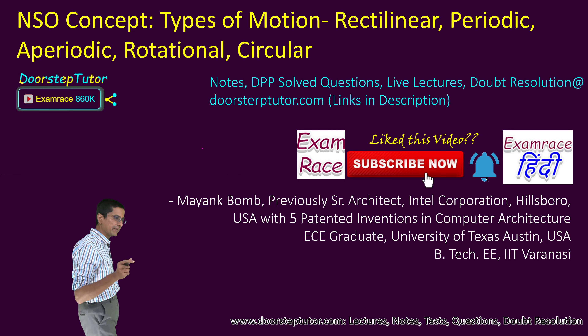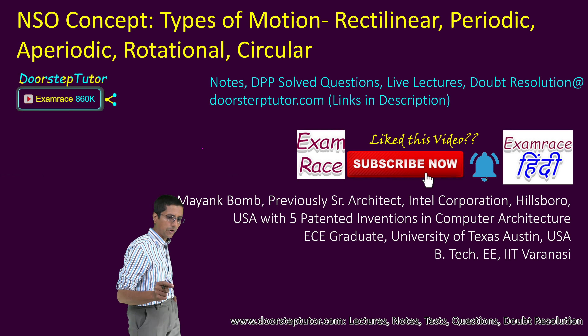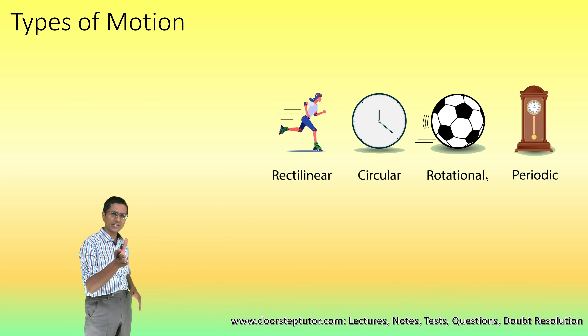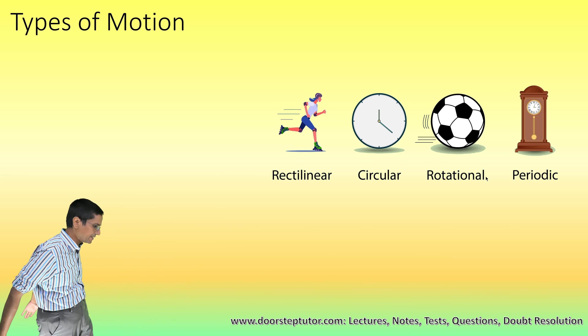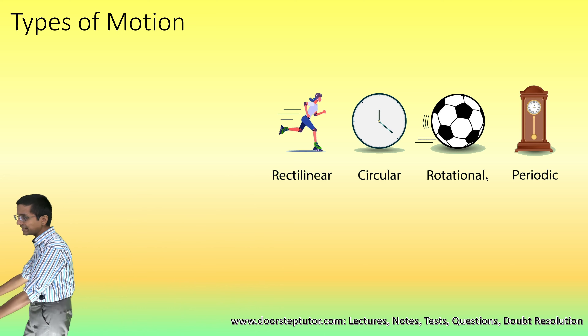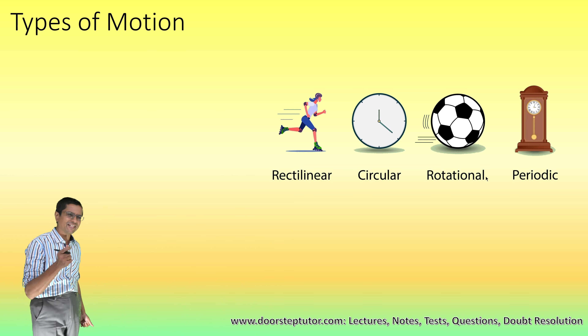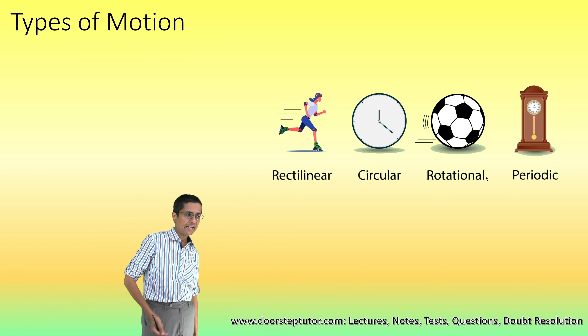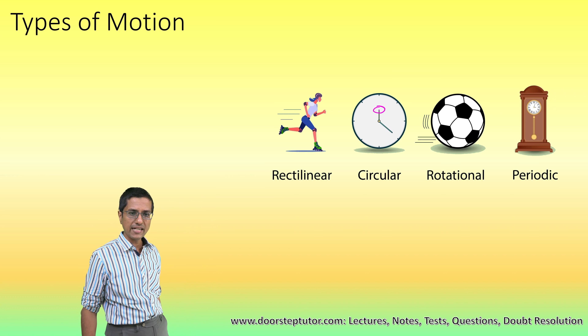Types of motion are very important from the point of view of NSO, and in all NSO exams expect questions on this. The very first kind of motion we are discussing is when a person or thing is moving in a straight line — that is known as linear or rectilinear motion. The best example is a person running on a straight track.